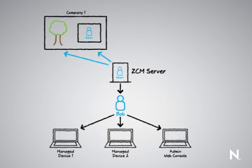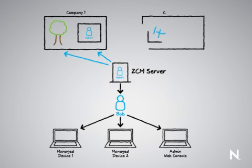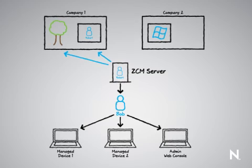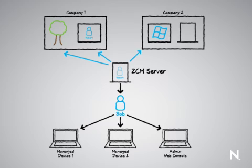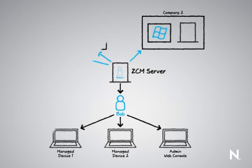Additionally, because of the way we do this, if you happen to acquire a company and now want to extend management to their users, it's simply a matter of taking your ZCM server, hooking it up to the user source in the company you just acquired, and now all of the users have access to whatever resources they need. You can then put a satellite server out at the office in Company 2 to get the content local to them, and now you're ready to begin having Company 2's employees use your applications or apply your policies.